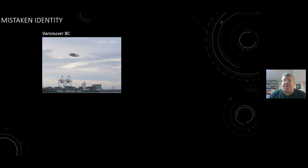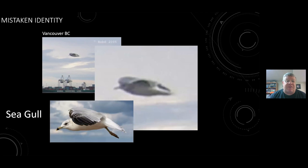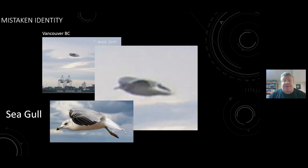Here's an example of mistaken identity — a purported photo of a UAP. I'm a bird watcher, I've been a bird watcher since I was five years old, and my father was a wildlife artist, so I looked at this and was able to identify it pretty quickly. It's a seagull. Very often when people take photos of scenery, a strange object in the picture is usually an insect or a bird.